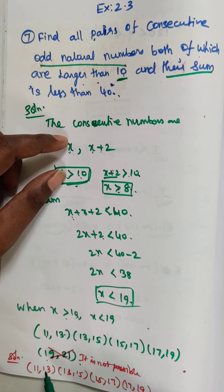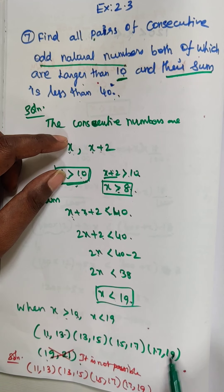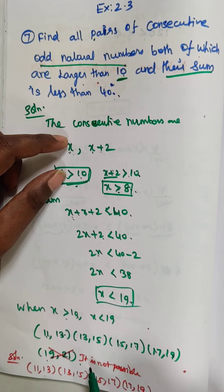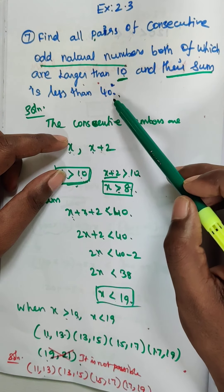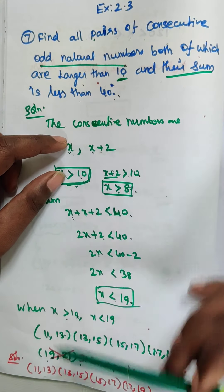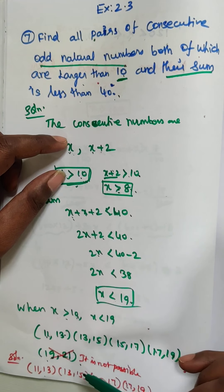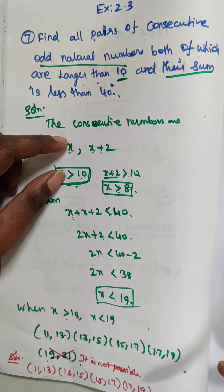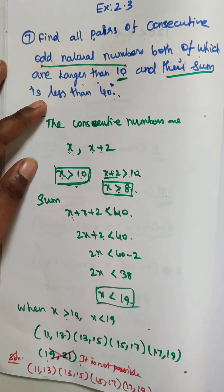So the valid pairs are: (11, 13), (13, 15), (15, 17), and (17, 19). The pair (19, 21) is not possible because their sum is not less than 40 — it falls outside the interval. These four pairs alone are the answer for this problem.